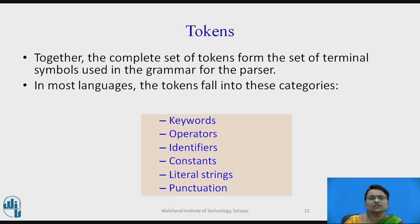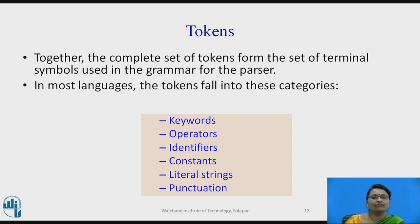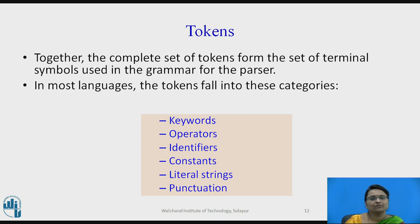Tokens are a complete set of terminal symbols used in the grammar and are provided to the parser. In most languages, tokens fall into categories: keywords, operators, identifiers, constants, literal strings — any string written in double quotation marks — and punctuation. Every lexeme matches a pattern, and based on that pattern, it provides a token as a category. This is the concept of tokens, patterns and lexemes.